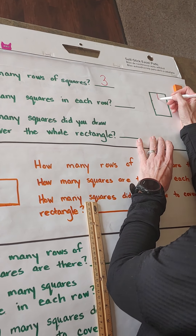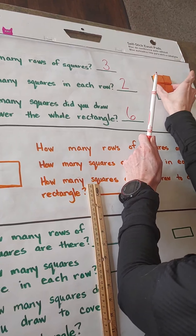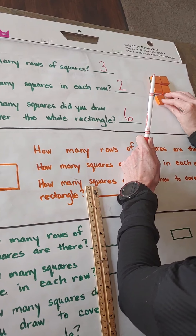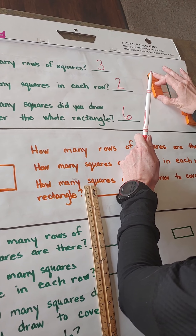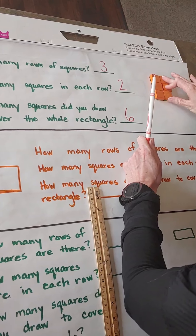How many squares in each row? One, two — two squares in each row. How many squares did you draw to cover the whole rectangle? One, two, three, four, five, six. I could also count by twos: two, four, six. Or I could count by threes: three, six.